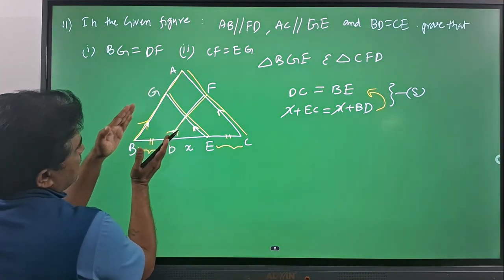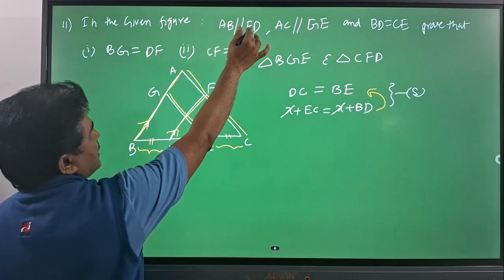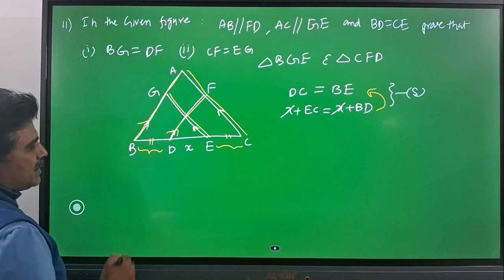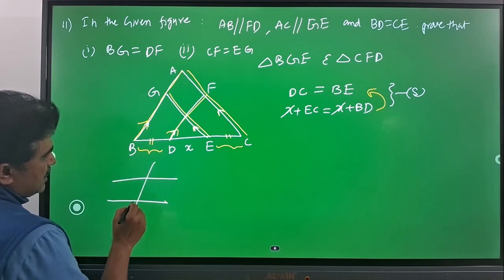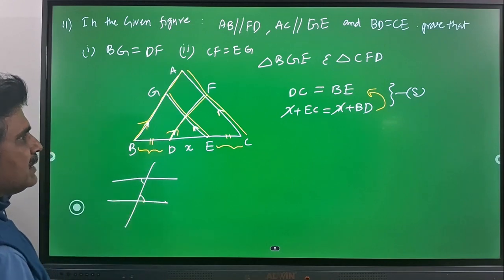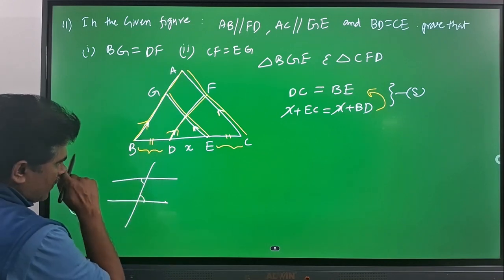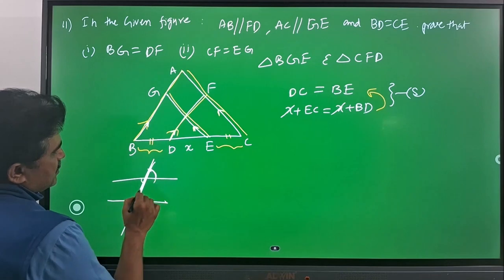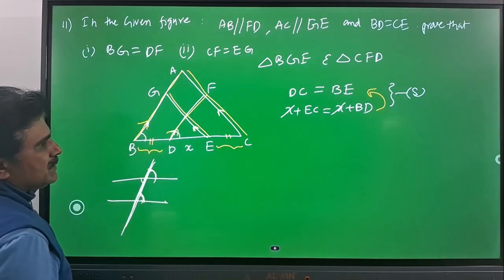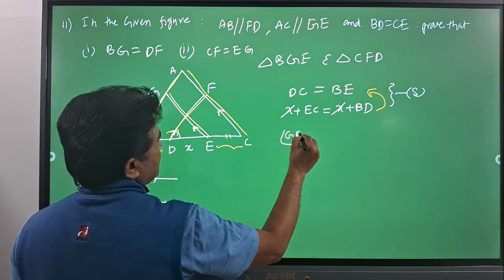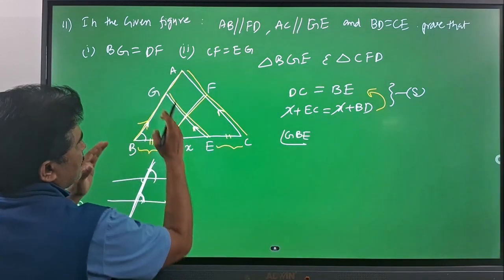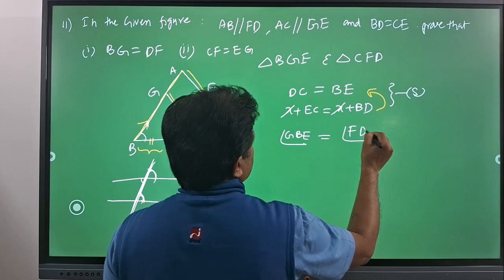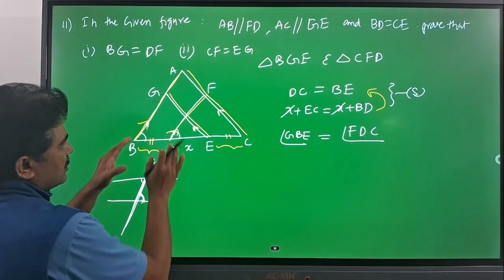Since AB and FD are parallel, if we consider BC as a transversal line for those two parallel lines, the corresponding angles are equal. So angle GBE from triangle GBE is equal to angle FDC from triangle FDC, because these two corresponding angles are equal.